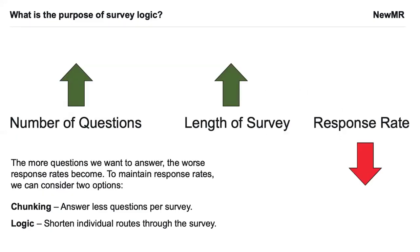This leads to a basic problem. As we increase the number of questions, we increase the length of the survey, potentially harming the experience and maybe even harming our response rate. To maintain that experience, there are two things researchers can consider. The first is chunking — answering fewer questions per survey, maybe having more surveys with fewer questions. That can become unwieldy, so what we have instead is survey logic. We use logic to shorten individual routes through the survey, so every participant's view of that survey might be different depending on the questions they answer, and as we answer one question it affects which question we answer next — giving us all a personal view of that survey.